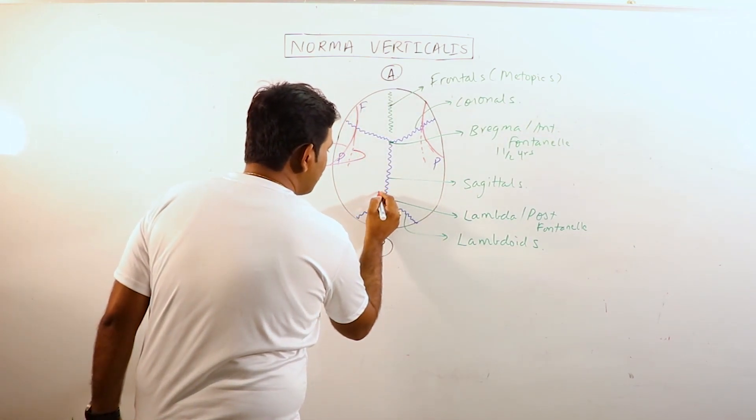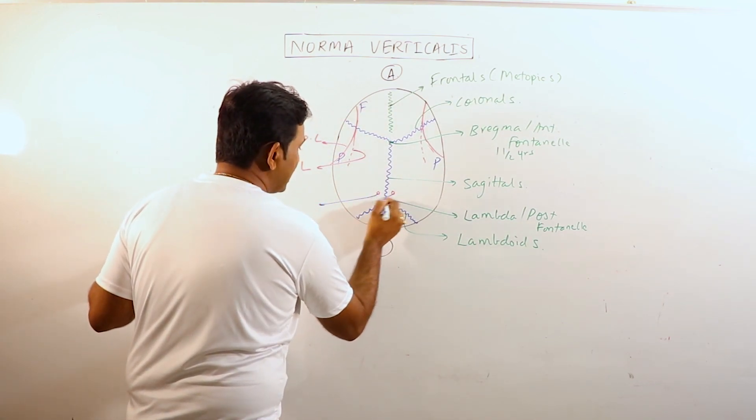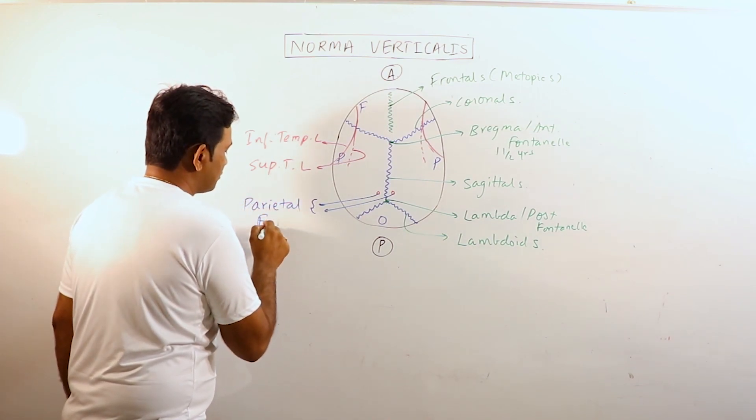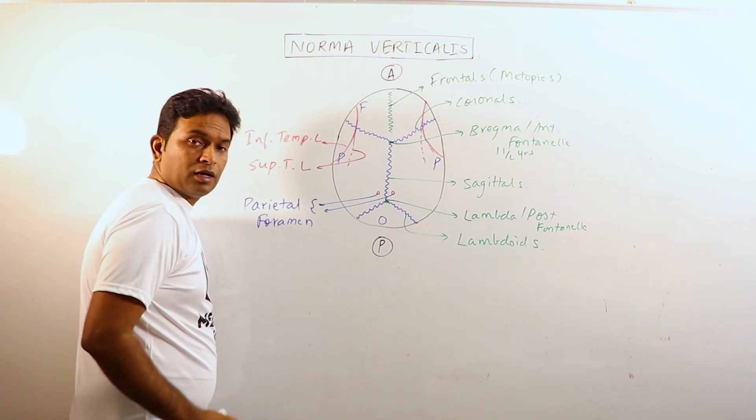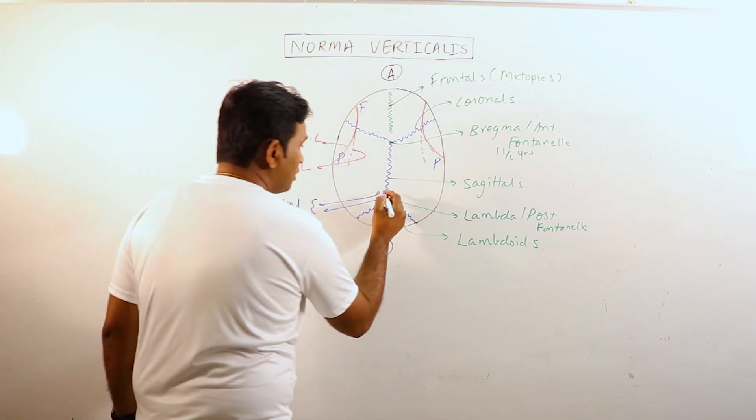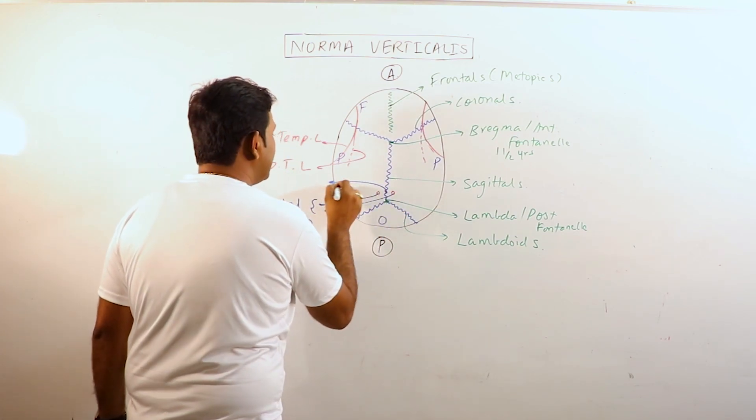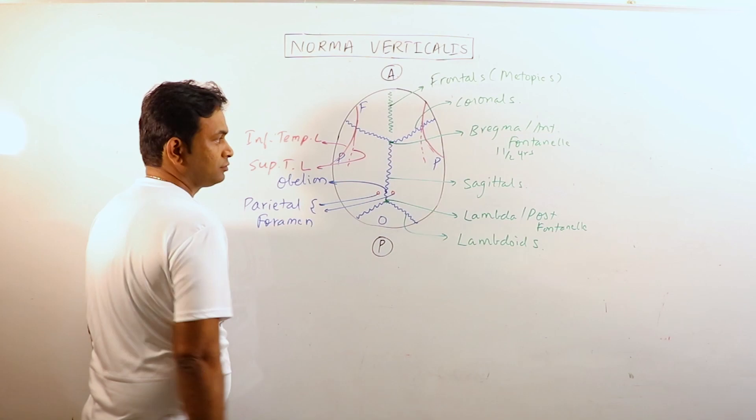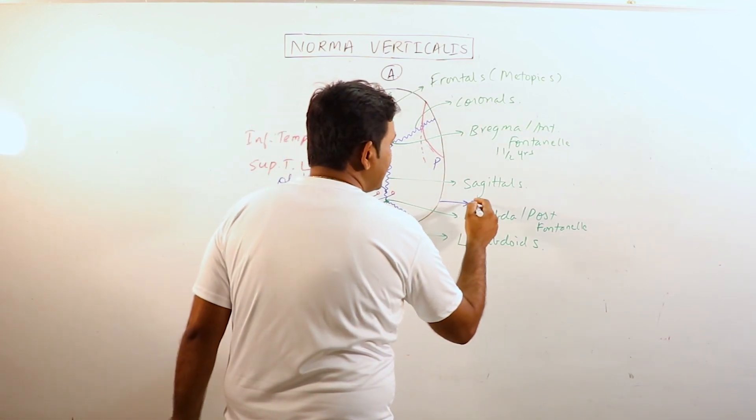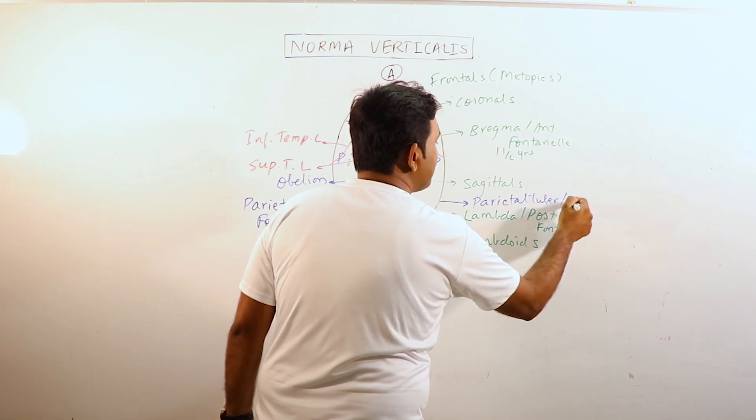Now, there are two foramens in the parietal bone. These are known as parietal foramens. The parietal foramens transmit the emissary veins which drain into superior sagittal sinus. The midpoint between the parietal foramens on the sagittal suture is termed as obelion. These convexities or the area of maximum convexity in the parietal portion is known as parietal tuber or eminence.